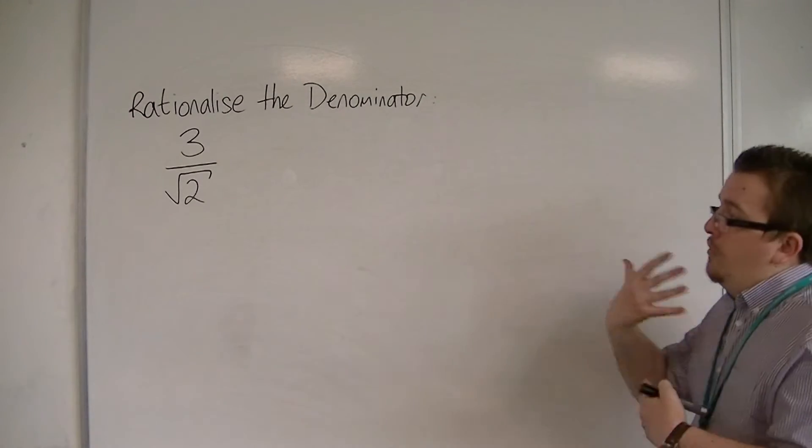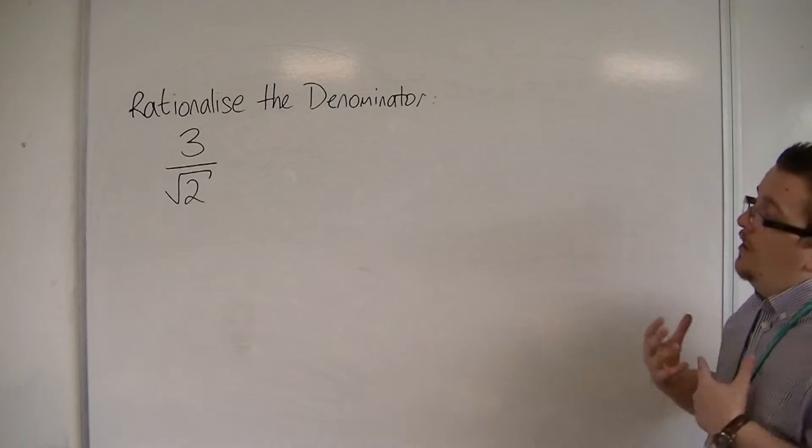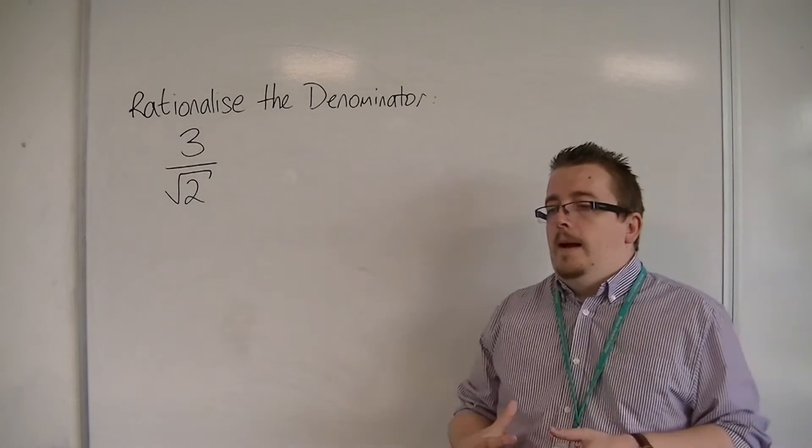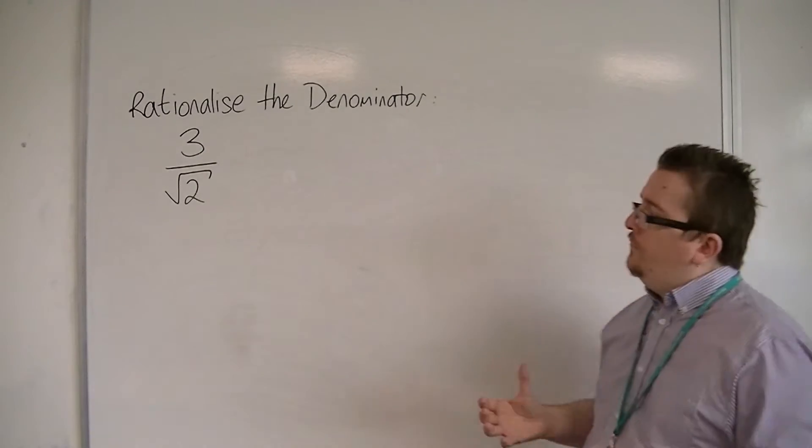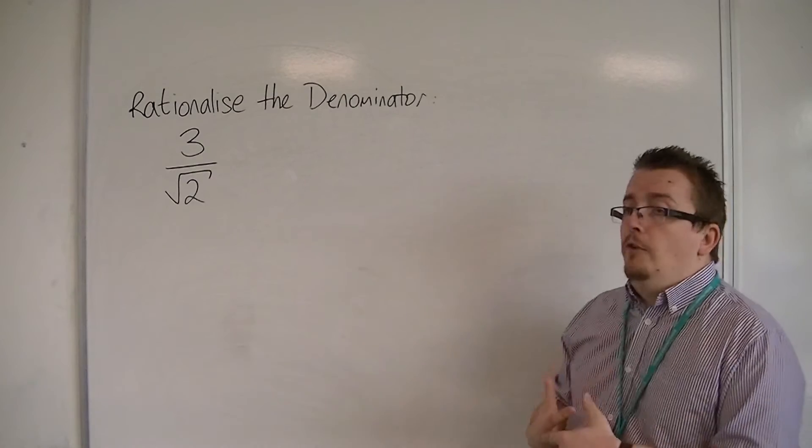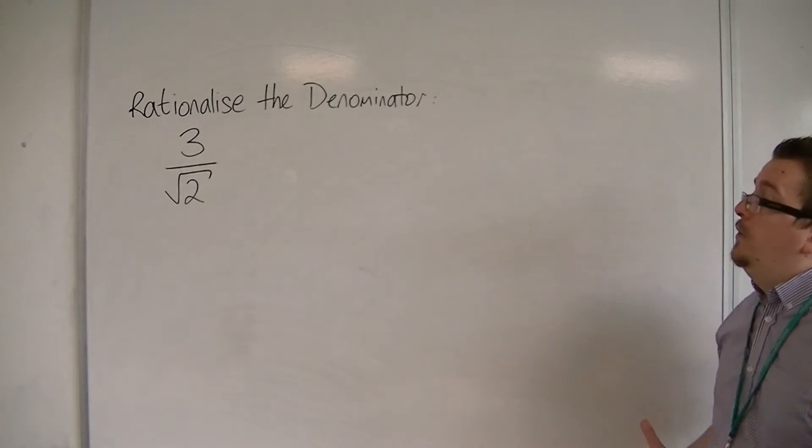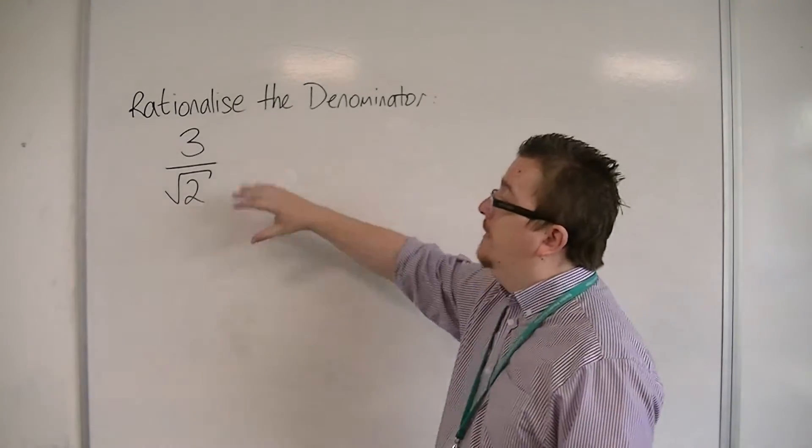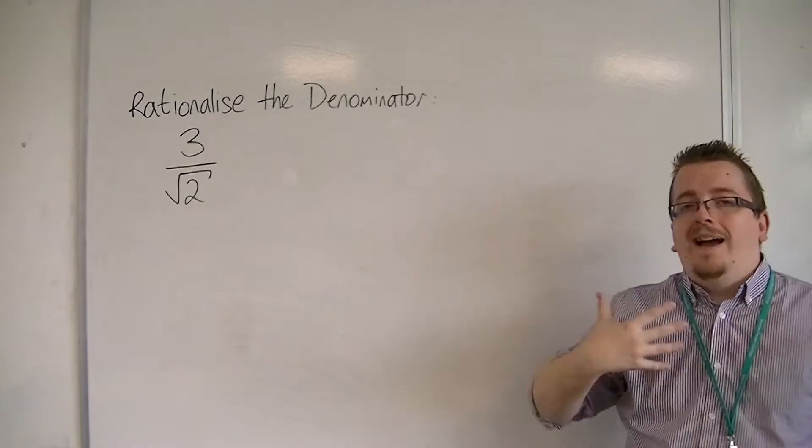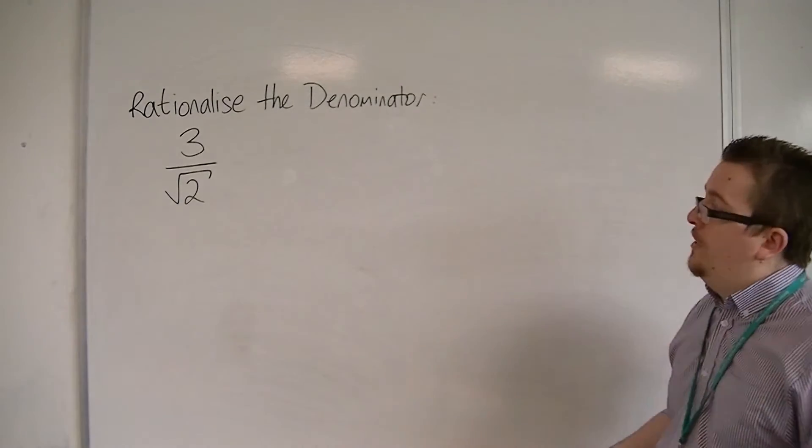So otherwise the process just wouldn't work. Because you've got to round it and you can't write it as a fraction, the answer that you get won't be exact. So this process of rationalising the denominator came about. And it's something we still use today, because we don't particularly like to deal with fractions that have a surd in the denominator. And hence that's why we rationalise the denominator.